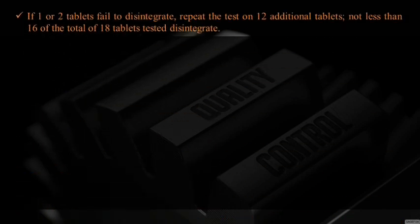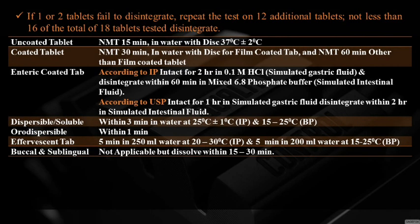If one or two tablets fail to disintegrate, repeat the test on 12 additional tablets. First, six tablets are taken in the disintegration assembly; if one or two fail to disintegrate, the test is repeated on 12 tablets, making 18 total, of which not less than 16 must disintegrate.